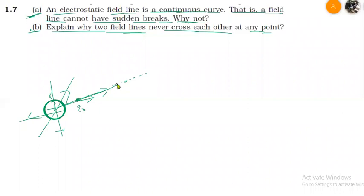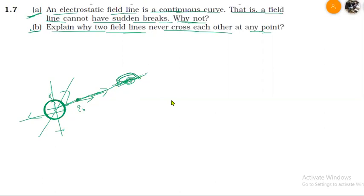You will feel a force at every point. There will always be a place where you can put a test charge and it will experience a force. So everywhere within the region there is force. That is why, for a positive charge, if there are field lines, they will always be continuous.